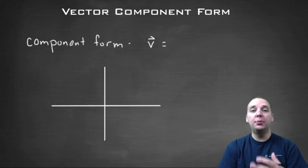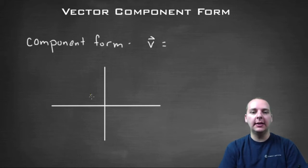A very common way of expressing or writing a vector is in what's known as component form. And basically it goes something like this.